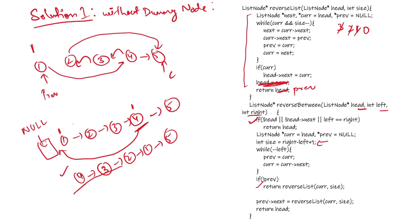This is how we solve the problem without a dummy node. As you can see, without a dummy node we have to handle many if-else conditions and carefully think about all the edge cases. But if we use a dummy node, it makes our code very neat and clean, and we do not need to think about edge cases separately - the dummy node handles all of them automatically. Let's see how to solve this with a dummy node.